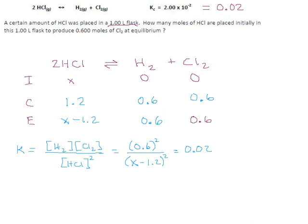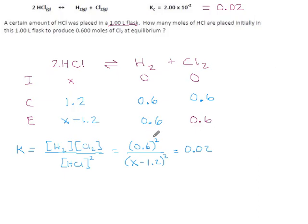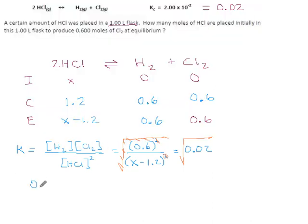Can we solve that for X? Yes. When everything on one side is squared, it's a good option to take the square root of both sides. The square root strips the squares off both terms on the left: we get 0.6 over (X − 1.2), no longer squared. On the right side, the square root of 0.02 is 0.1414.